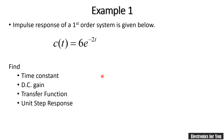This is our example: the impulse response of a first-order system is given as c(t) = 6e^(−2t). We have to find the time constant, DC gain, transfer function, and unit step response — four terms in total.